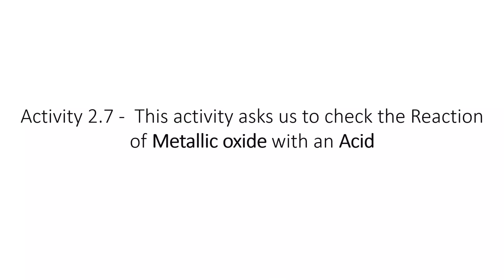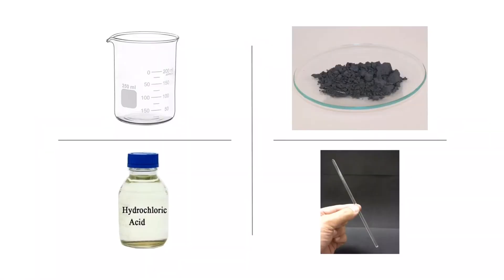So today we are going to react acid with metal oxide. Today we will test the acid with metal oxide. For this activity we need copper oxide, a beaker, hydrochloric acid, and a stirrer.